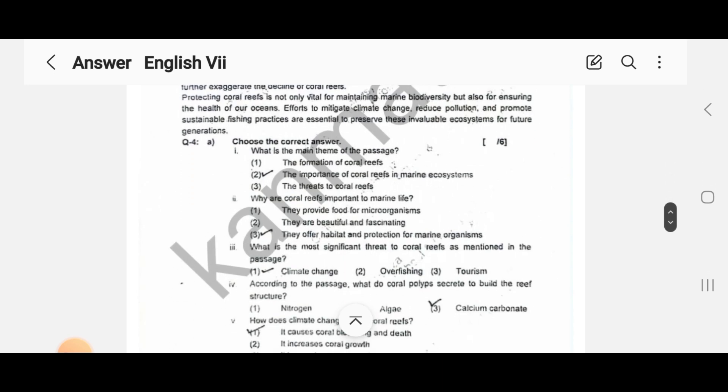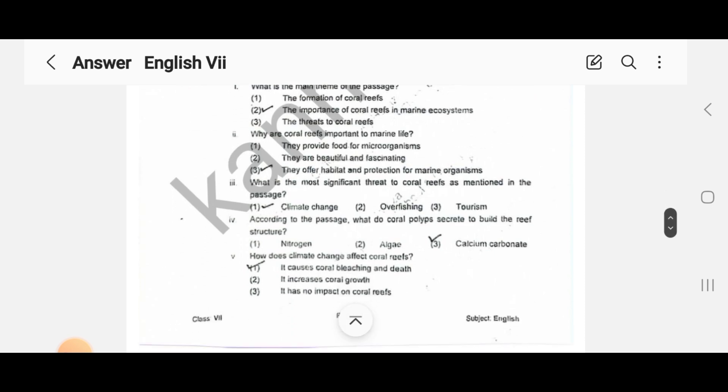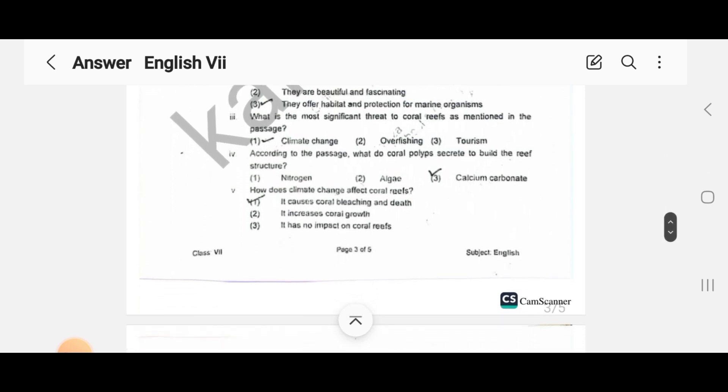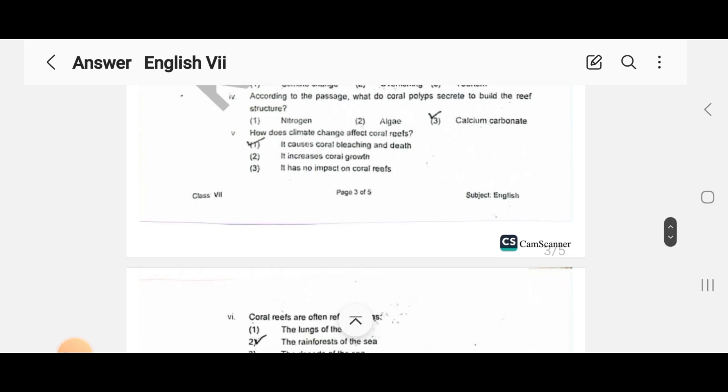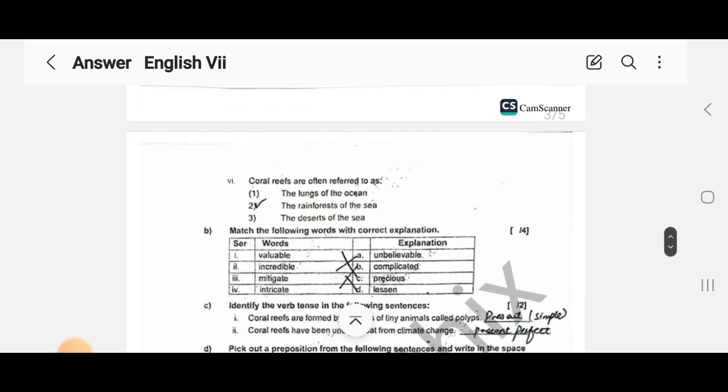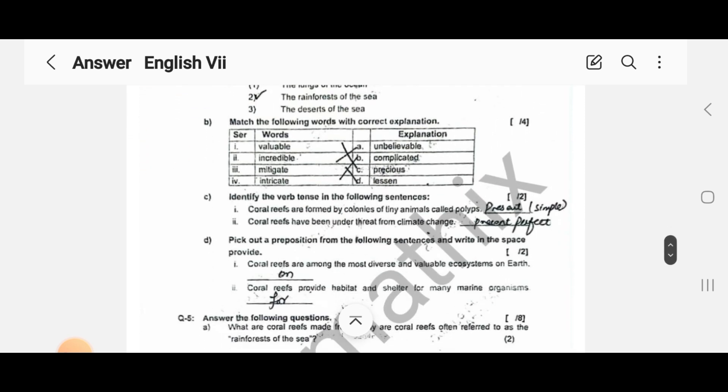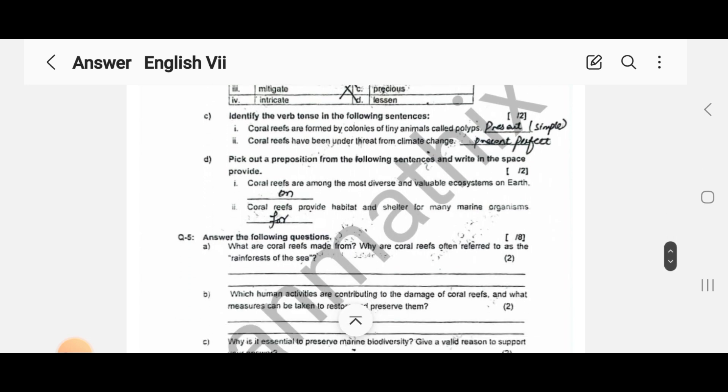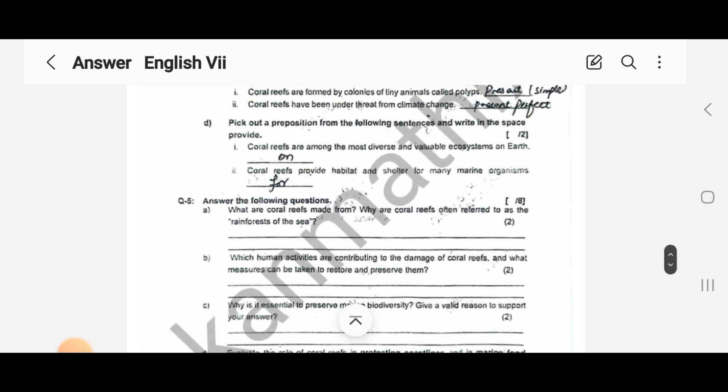In section B, you have to read the following paragraph and then answer the questions given below. A paragraph is given here, and you have to read it thoroughly and then answer the questions. The questions are also in the form of MCQs so you can easily do it. Correct options are in front of you.